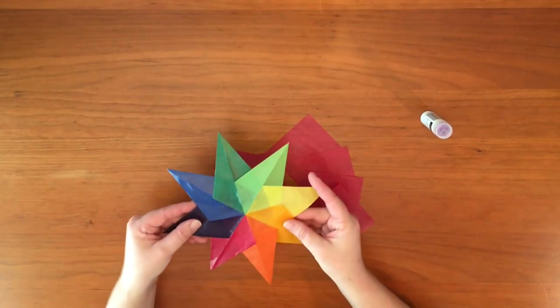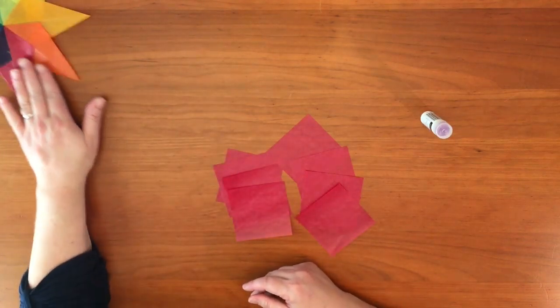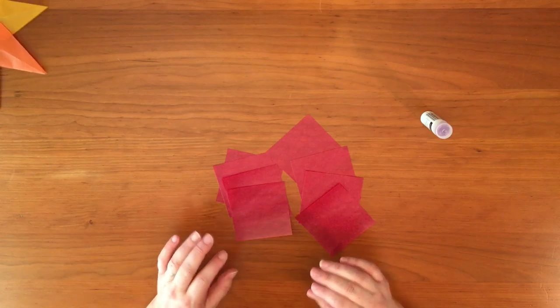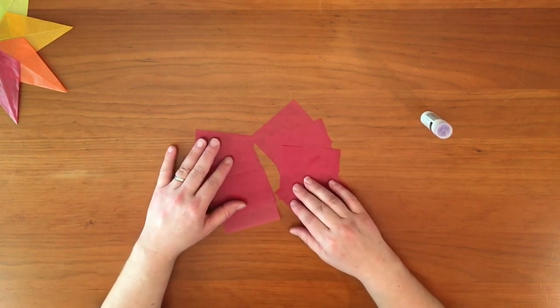Now that we've made our eight pointed rainbow star, we're going to move on to a different fold. We're going to be making the pinwheel star, and I'll tell you how to make a checkerboard star as well.